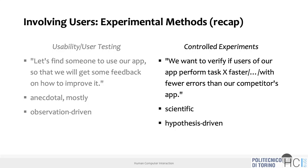You observe people doing some task with your application and say it's usable or more or less usable — they understand how to work or not. Controlled experiments, instead, are the most scientific part because they are hypothesis-driven. You formulate a hypothesis involving a comparison between two different apps, two different systems, two different prototypes, and you perform some experiment and analyze data in a scientific way. So if you want to summarize: we want to verify if a user performs a given task faster, with fewer errors, with more precision — whatever you want — than a competitor app.